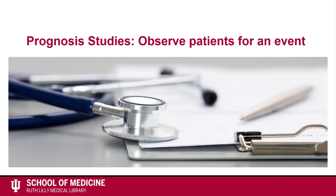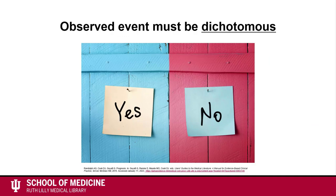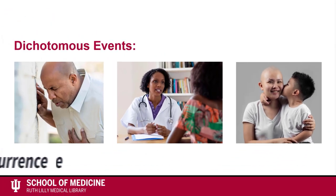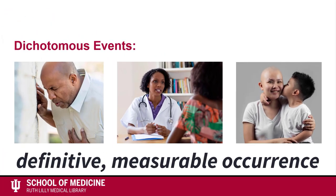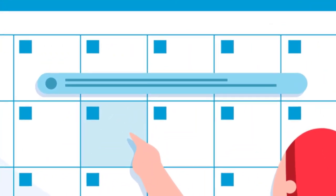Prognosis studies are used to estimate prognosis of a disease. Prognosis studies observe patients over a set period of time to see if they experience an event. The event researchers are looking for must be dichotomous — yes or no. Examples of dichotomous events include a cardiac event, a cancer diagnosis, or patient survival: any event that has a definitive, measurable occurrence. Also, researchers must know how long after the start of observation that the event occurs.